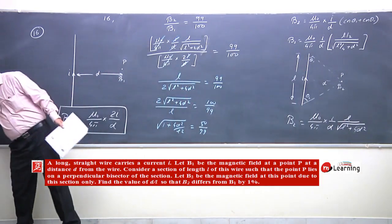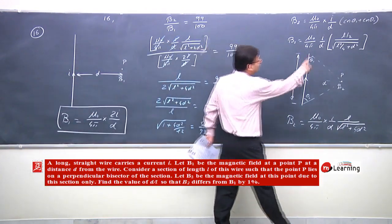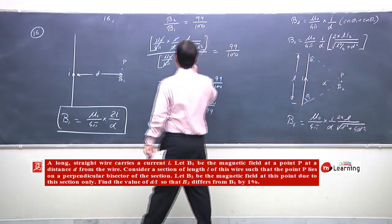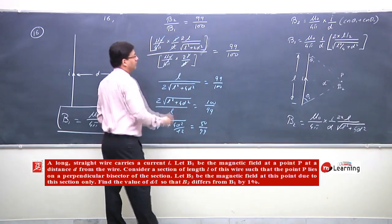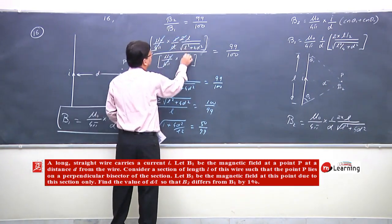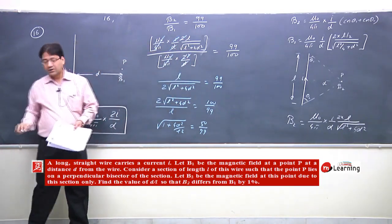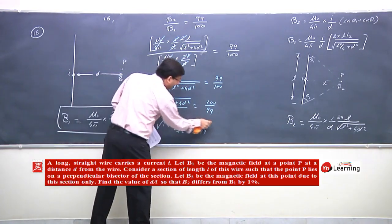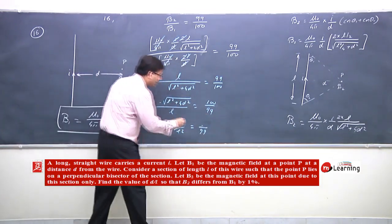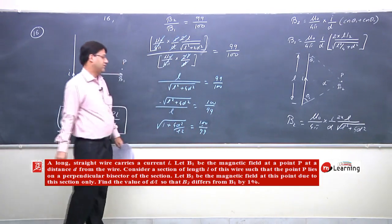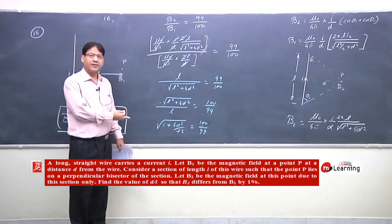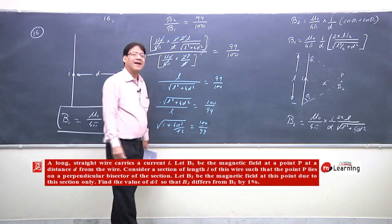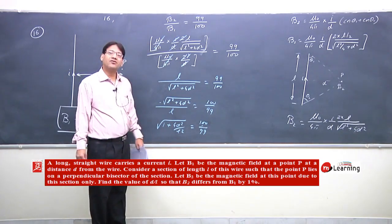We had not written the factor of 2 from the cos θ₁ + cos θ₂ term earlier, but that 2 term appears and cancels on both sides.